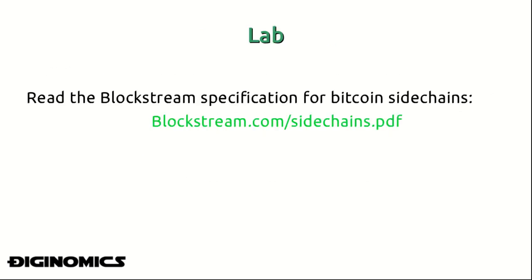Side chains truly represent one of the most interesting and important developments in Bitcoin today. If the promise of side chains is realized, we will be able to create applications which can integrate with the main Bitcoin blockchain and achieve interoperability in terms of security and value. By not using standalone blockchains, we can inherit the functionality of the main Bitcoin network and truly realize what the Bitcoin network represents as an internet of money.